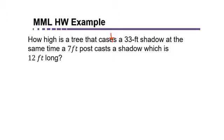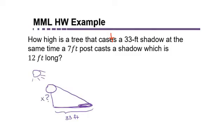So I'm going to first draw my tree. This is my tree and it casts a 33-foot shadow. So the sun is shining down causing the shadow on the ground and this shadow is 33 feet long and we don't know the height of this tree. That's actually the unknown we're looking for so I'm going to call that x.